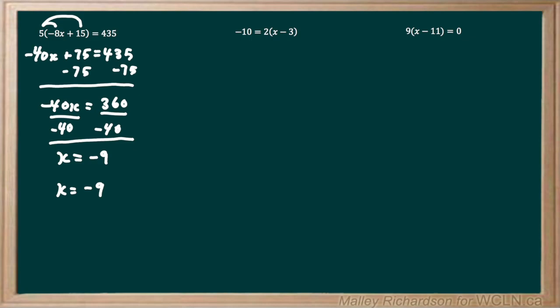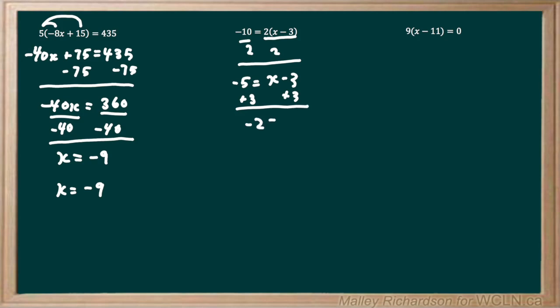Moving on to our next example, we have negative 10 equals 2 times, in brackets, x minus 3. Again, let's do our first method by getting rid of this 2 — we want to divide both sides by 2. Then we draw our line, and we're left with negative 10 divided by 2, which is negative 5, equals x minus 3. Now we just want to isolate for x, so we're going to add 3 to both sides. We get negative 5 plus 3 is negative 2, and x minus 3 plus 3 just leaves us with x, so our final answer is x equals negative 2.